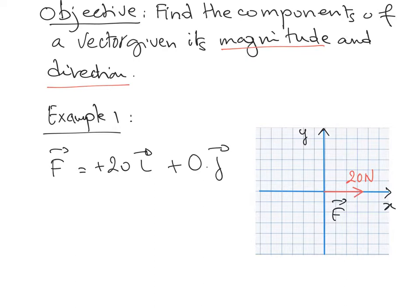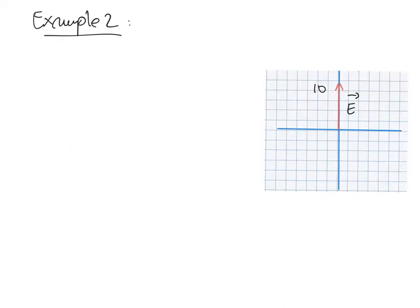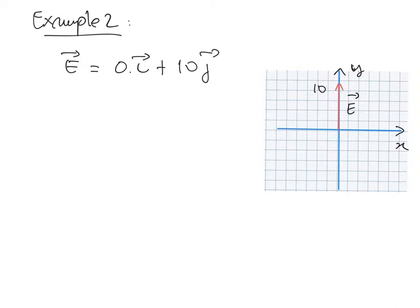Zero because there is no component along the Y axis, and in component form it can be written as (20, 0). In example number two, we have an electric field E directed along the positive Y axis. E as a vector can be written as 0·I, because there is no component along the X axis, plus 10·J, where J is the unit vector along Y.